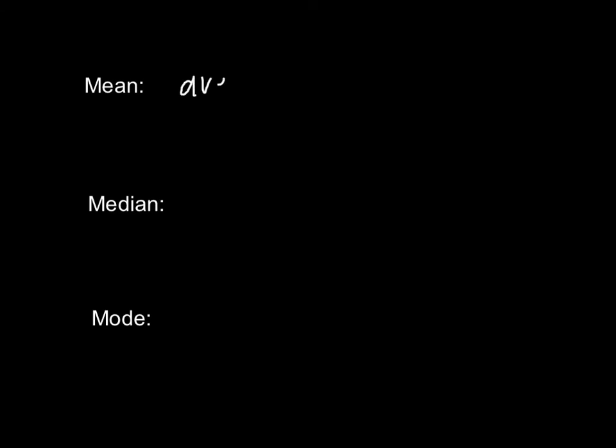The mean is the same thing as our average, and we find our average by taking the sum of our values and dividing by the number of our values.